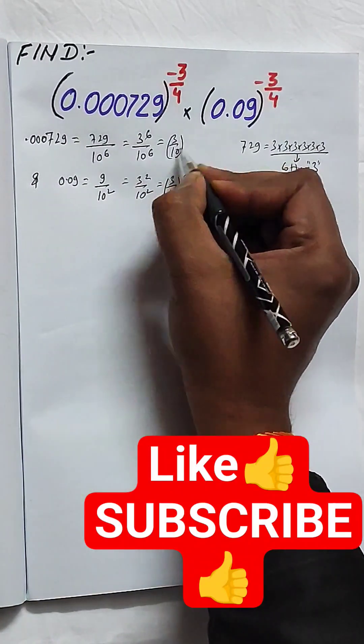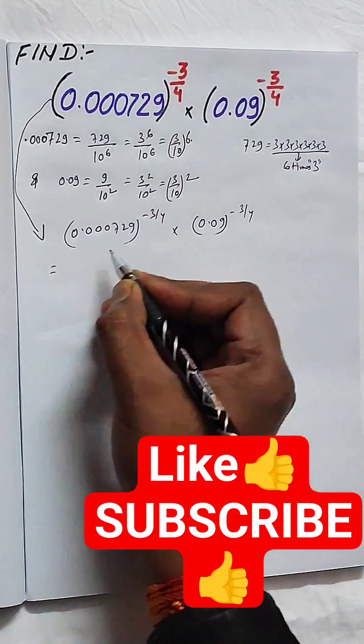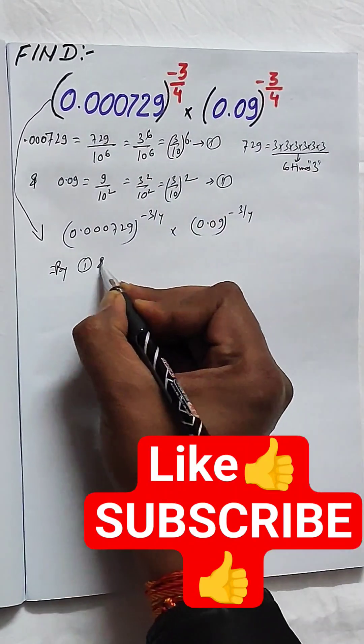Since 729 has the factor 6 times 3, it can be written like this. Similarly, 0.09 can be written as (3/10)^2.